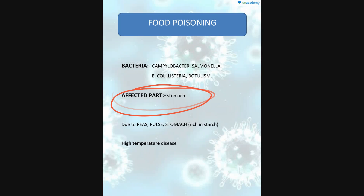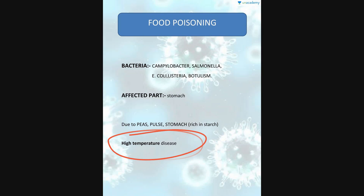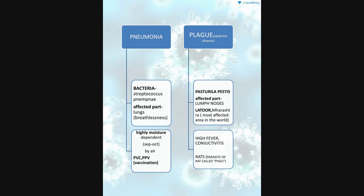The affected part in food poisoning is the stomach. The stomach is affected, particularly due to foods rich in starch. Food poisoning is associated with high temperature disease — this is a key point.